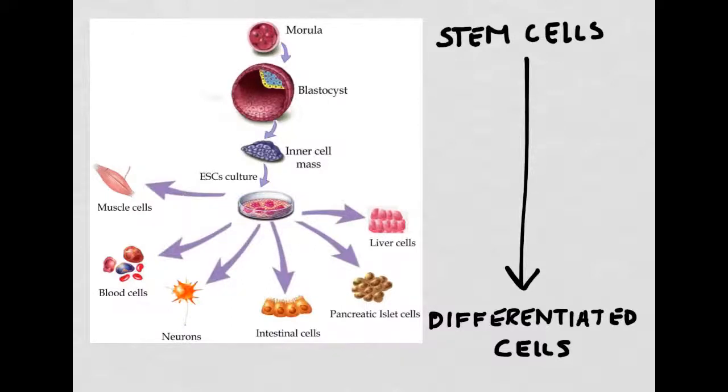They go through a specialization process that results in differentiated cells - for instance, liver cells, pancreatic cells, cells in the intestinal system, neurons, blood cells, or muscle cells. These differentiated cells cannot go backwards and become a totipotent cell.